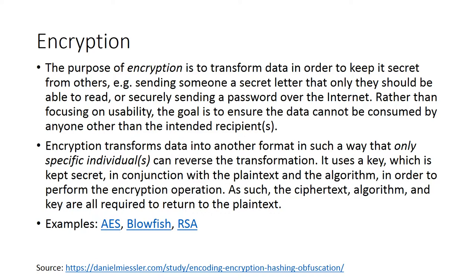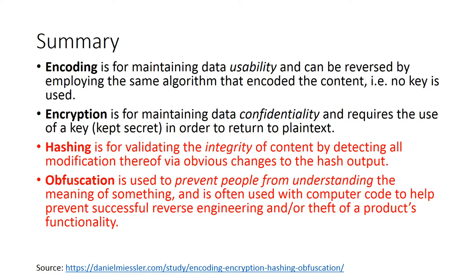Once again, credit down below — I will link that article in the description of this video. Now, a summary: encoding is for maintaining data usability and can be reversed by employing the same algorithm that encoded the content, so no key is used. And encryption is for maintaining data confidentiality and requires the use of a key which is kept secret in order to return to plain text.